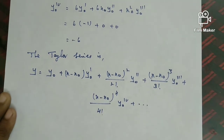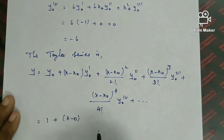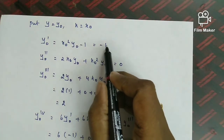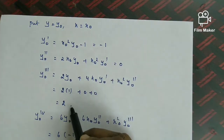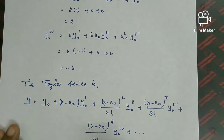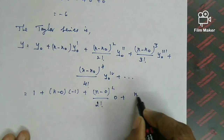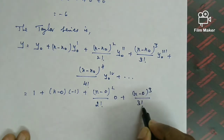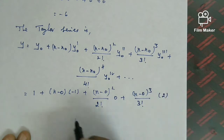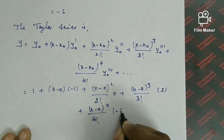We substitute the values into the Taylor series expansion. y equals y0 plus (x minus x0)·y0 dash plus (x minus x0)²/2!·y0 double dash plus (x minus x0)³/3!·y0 triple dash plus (x minus x0)⁴/4!·y0 fourth derivative plus ... Substituting x0 equal to 0: y equals 1 plus x·(−1) plus x²/2·(0) plus x³/6·(2) plus x⁴/24·(−6) plus ...